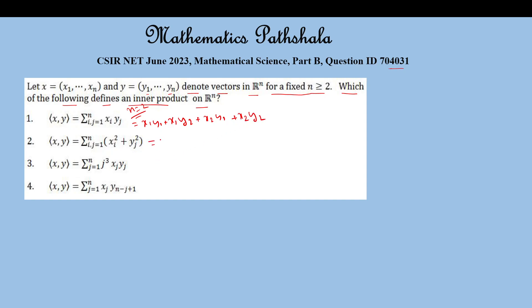Option 2 is: x1² + y1² + x1² + y2² + x2² + y1² + y2², which simplifies to 2(x1² + x2²) + y1² + y2².